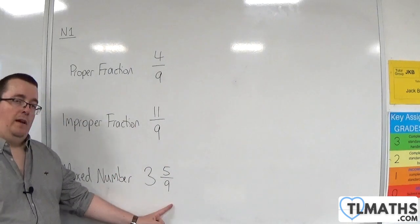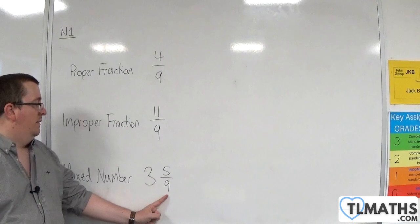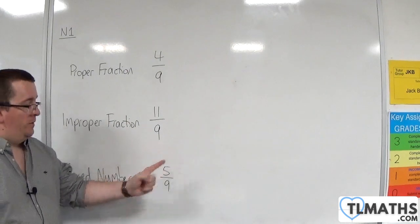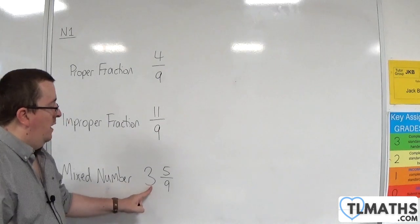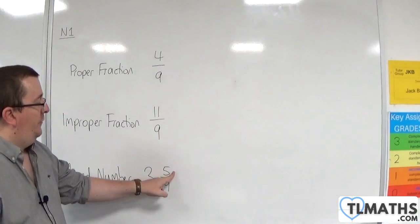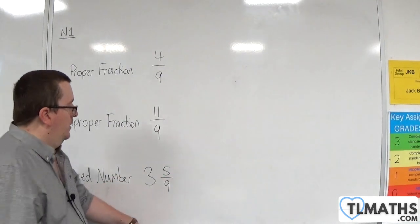And a mixed number like this can be rewritten as an improper fraction. So what we have is 3 wholes plus 5 ninths.